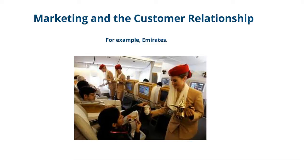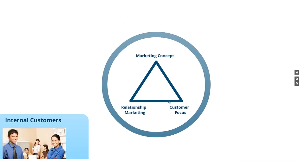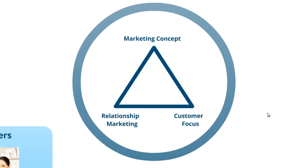This is at the opposite end of the scale to the old-fashioned production or product orientation, which is the basis of modern marketing. As a rule of thumb, relationship marketing tends to be practiced well in the airline and travel industries. However, branding is another way of maintaining the customer relationship, as is innovation and design. Nike and Apple may not deliver the same amount of face-to-face relationship building, but they do have very loyal long-term customers. Try to think of other examples of businesses that practice strong relationship marketing.